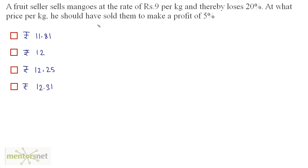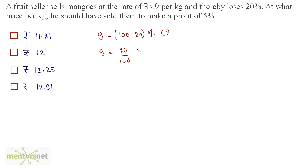A fruit seller sells mangoes at the rate of 9 rupees per kg and thereby loses 20%. At what price per kg should he have sold them to make a profit of 5%? When he loses 20%, the selling price is 9, so 9 equals 80% of the cost price, that is 80/100 times CP.